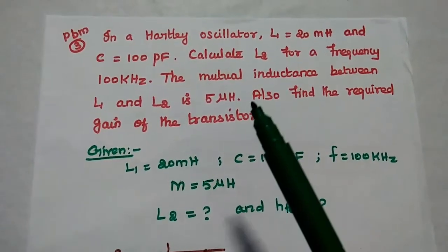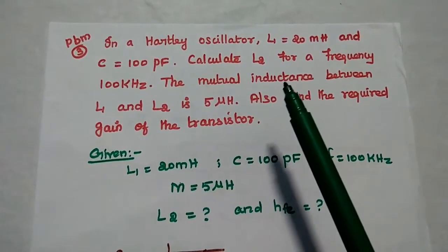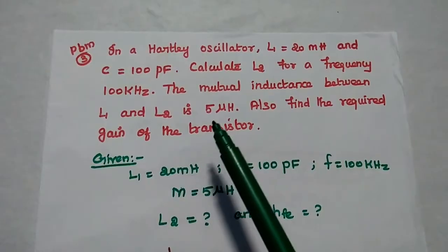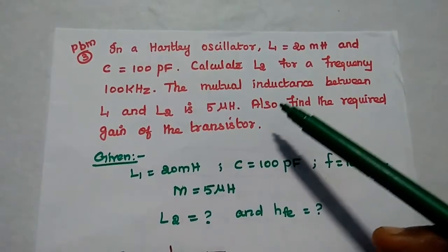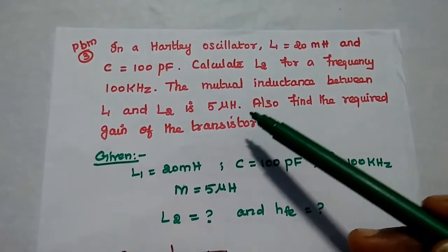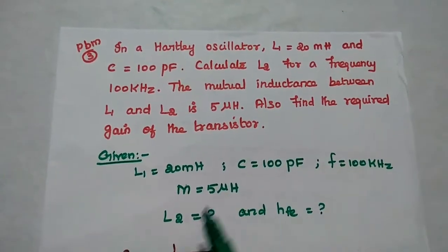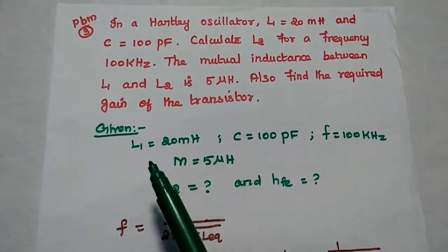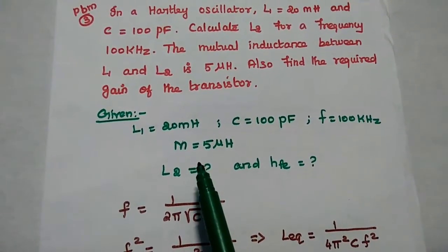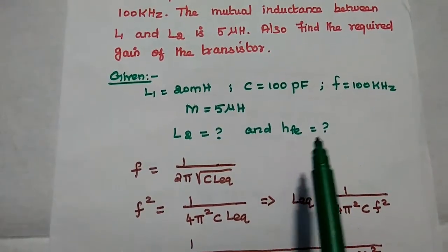The next important problem: in a Hartley oscillator, L1 is equal to 20 millihenry and C is equal to 100 picofarad. Calculate L2 for a frequency of 100 kilohertz. The mutual inductance between L1 and L2 is 5 microhenry. In this problem, mutual inductance M is 5 microhenry. The given data are: L1 = 20 mH, C = 100 pF, F = 100 kHz, M = 5 µH. We are going to find out L2 and the gain H_FE.